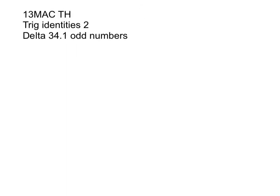Kia ora year 13 and 12. In this video I'm going to go through the odd numbered questions in delta 34.1. They are all proofs of trig identities. So I want you to watch my setting out. Make sure that yours is at this level of detail.